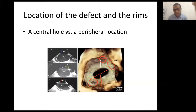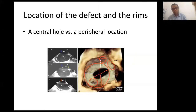An inferior defect will definitely have deficiency of the retro-aortic tissue, and an inferior defect will definitely have a deficient infero-posterior rim. The location of the defect has its own impact on successful outcome, as does the size of the defect.